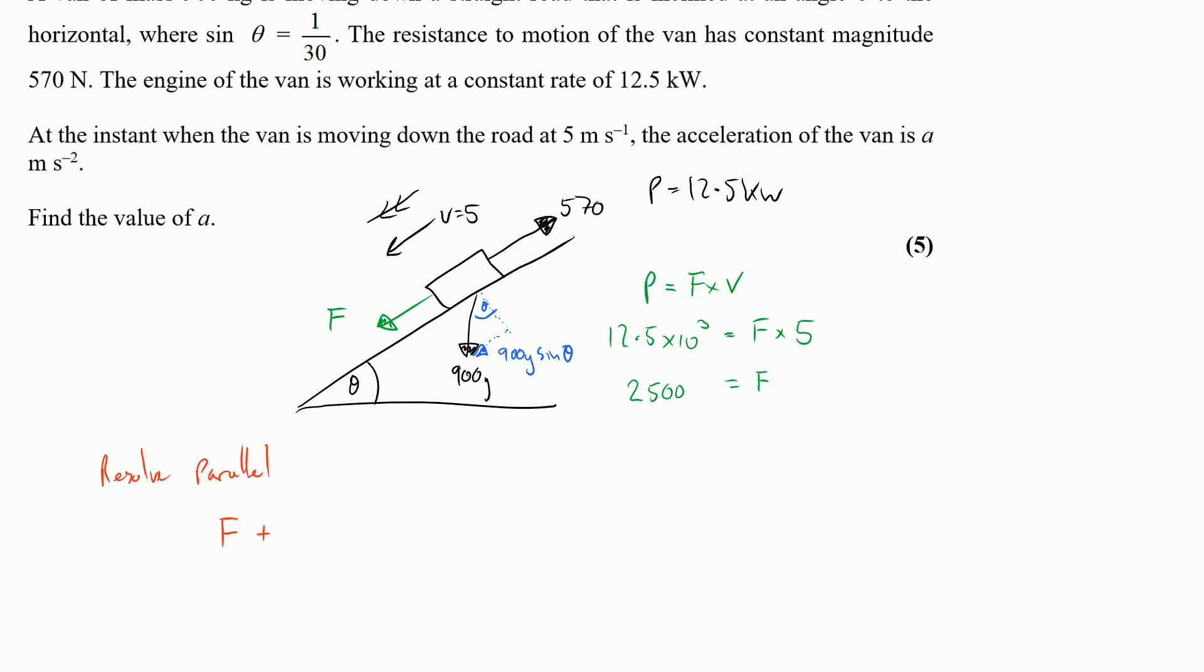The other force that acts down the slope is the 900 G sine theta. Subtract the forces that are acting up the slope which is 570 newtons. Those are the only forces acting up the slope.